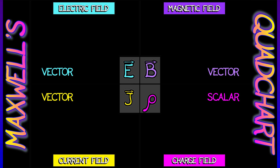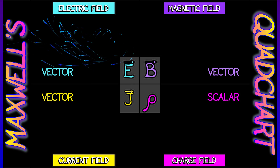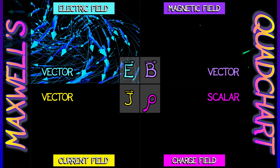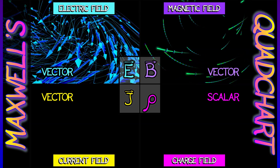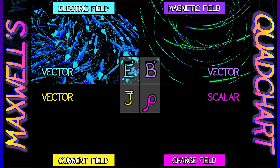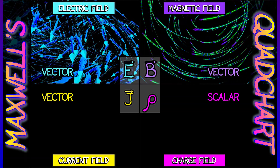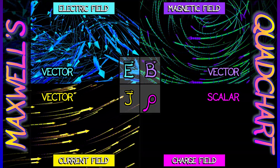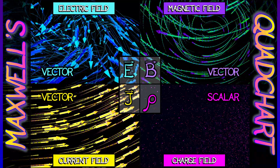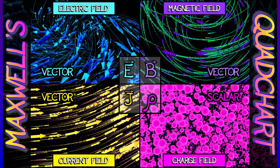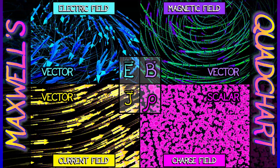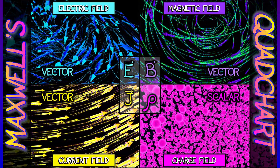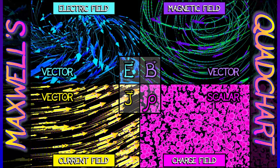Maxwell's equations involve four different fields. You've got an electric field called E — that's a vector field in three-dimensional space. You've got a magnetic field called B, which is also a vector field in 3D. But that's not all — you might think that's it with electricity and magnetics, but no. You've also got a current field denoted J, which is also a vector field, and a charge density scalar field denoted rho.